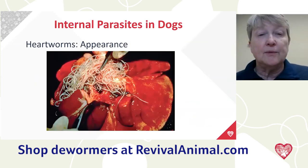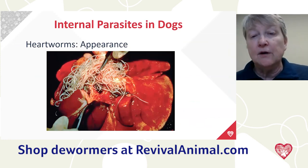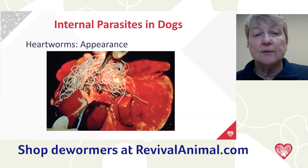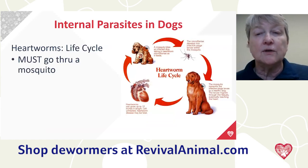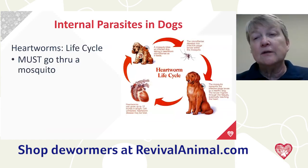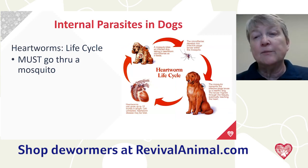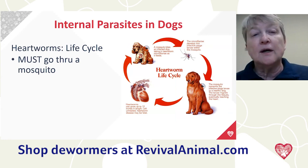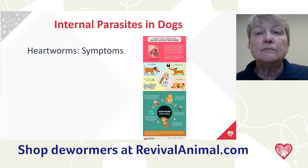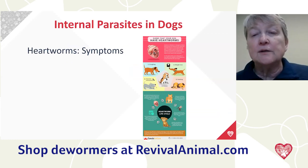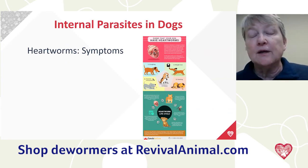Heartworm is probably the third most common parasite we see. They are truly worms that live in the heart and lungs — the name is very accurate. The critical thing about the life cycle is that heartworm MUST go through a mosquito. A pregnant dog cannot transmit heartworm to her puppies directly — a mosquito must bite her, then bite the puppies. Symptoms include cough, weight loss, exercise intolerance, panting, fainting, edema in the legs, and can lead to kidney failure, liver failure, and eye migration.